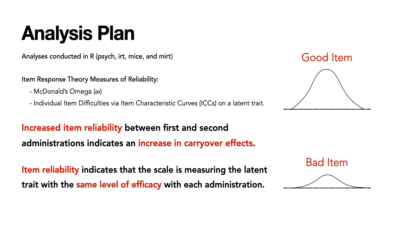So how are we observing carryover effects using this? We believe that an increased item reliability between the first and second administrations of the scale indicates an increase in carryover effects. The reason for this is: how would an item suddenly become more reliable? It has to be measuring something else, such as carryover, that is driving these results.